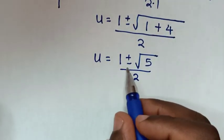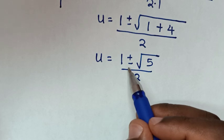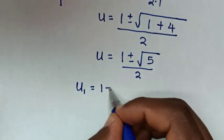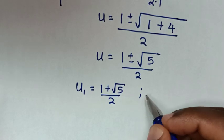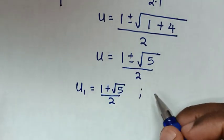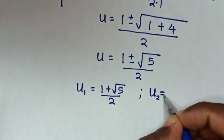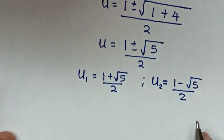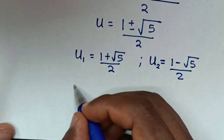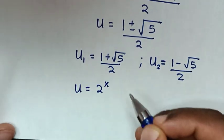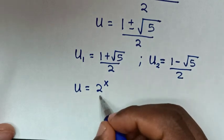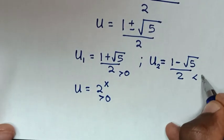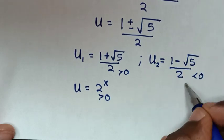Because of the plus or minus, we have two solutions. The first is u1 equals (1 plus square root of 5) over 2, and the second is u2 equals (1 minus square root of 5) over 2. Since 2^x must be greater than 0, and u2 is less than 0, we reject u2.